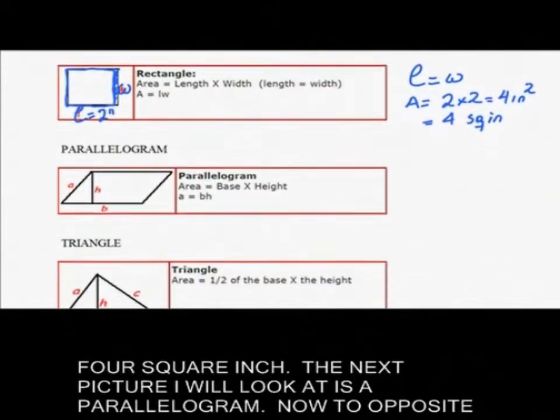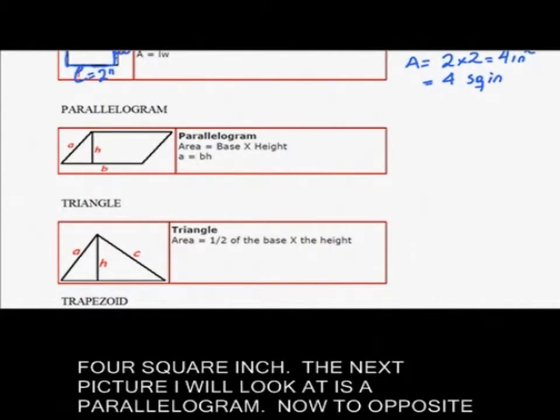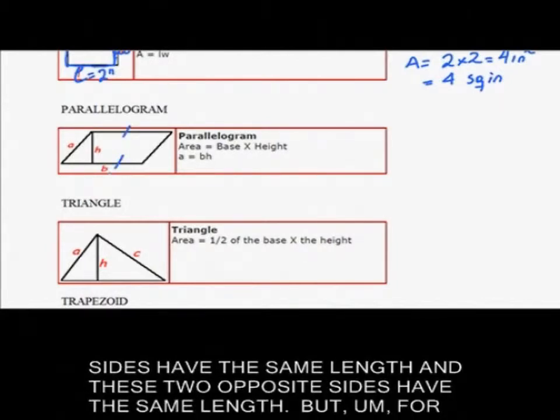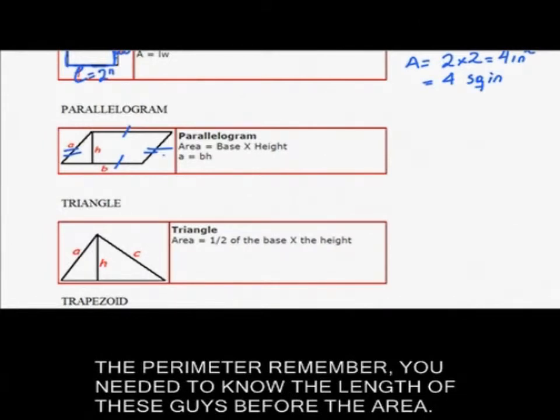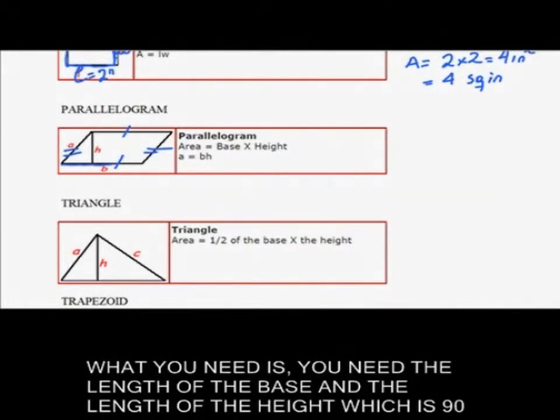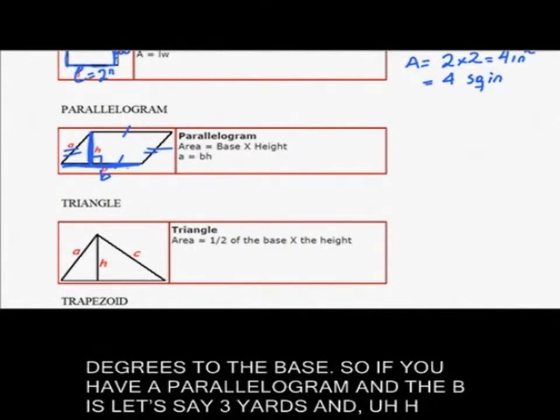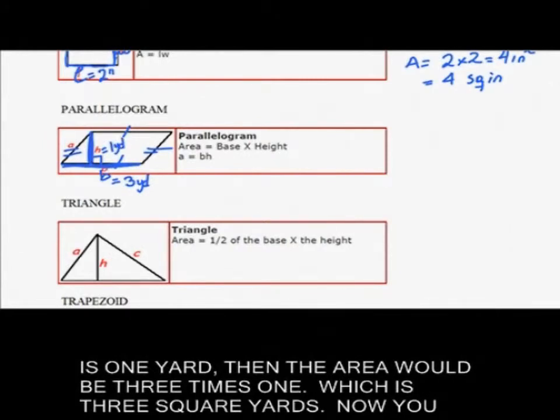The next picture I will look at is a parallelogram. Now two opposite sides have the same length and these two opposite sides have the same length. But for the area what you need is the length of the base and the length of the height which is 90 degrees to the base. So if you have a parallelogram and the base is let's say three yards and the height is one yard, then the area would be three times one which is three square yards.